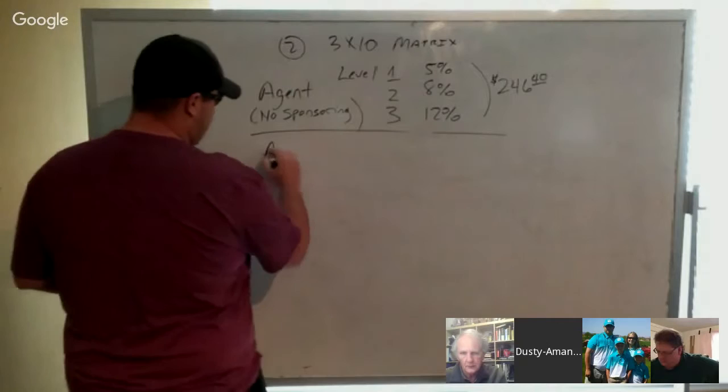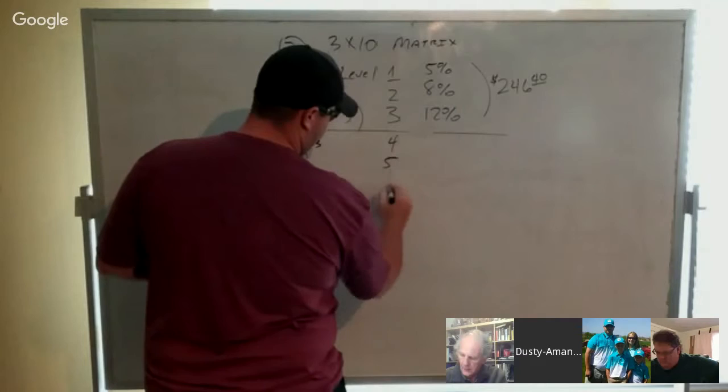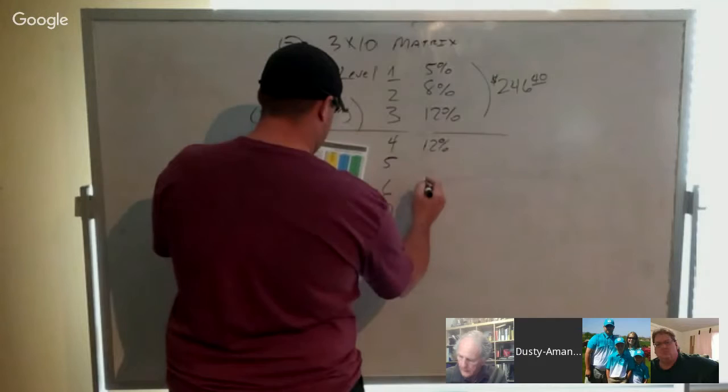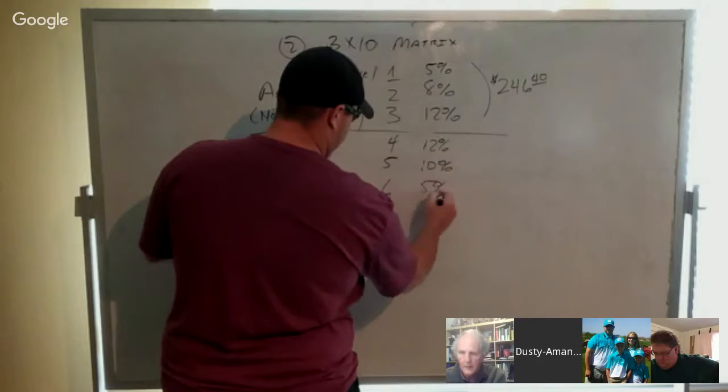So as an agent three, that opens up levels four, five, six, and seven. These levels pay 12%, 10%, 5%, and 5%.